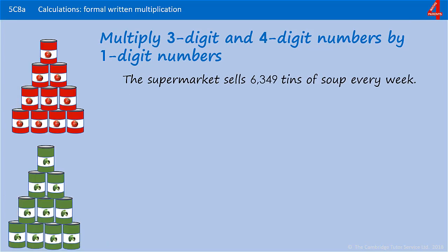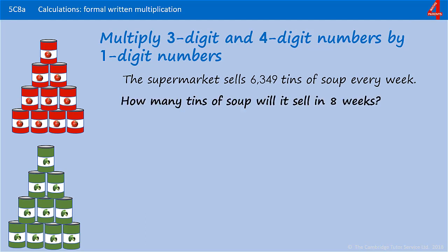And here's one for you to try. The supermarket sells 6,349 tins of soup every week. How many tins of soup will it sell in 8 weeks? Pause the video and have a go.